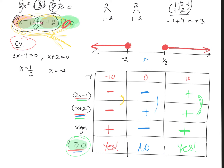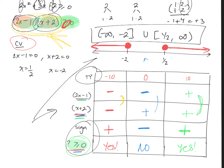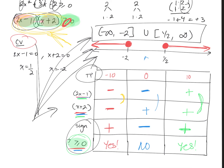My final answer in interval notation is negative infinity to negative 2, union one half to positive infinity, including both endpoints. To summarize what I need to see: critical values, test points, checking the signs, graphing, and interval notation. You don't need to show this exact box setup, but those are the required elements.